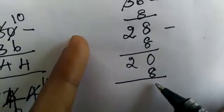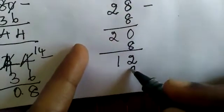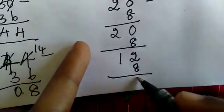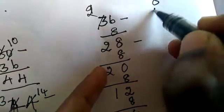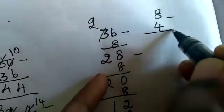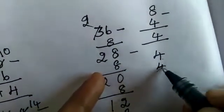Now 20 minus 8, 12. Now 12 minus 8, 4. Now 8 minus 4, 4. Now 4 minus 4.